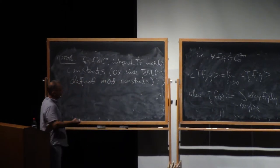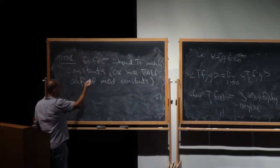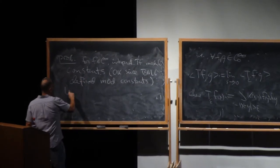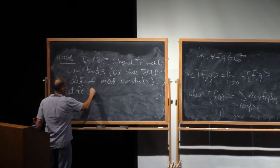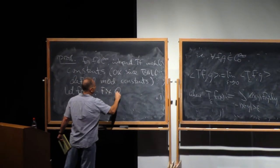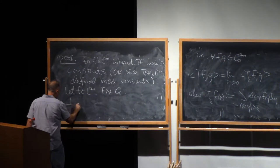We need to show that the BMO norm of T of F is bounded. So let F be in L infinity, and we fix a cube Q. And we need to consider this.